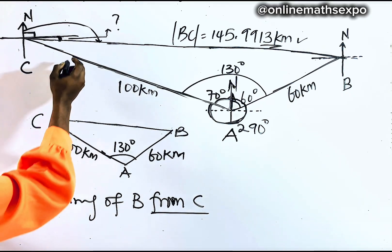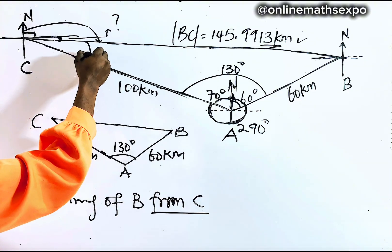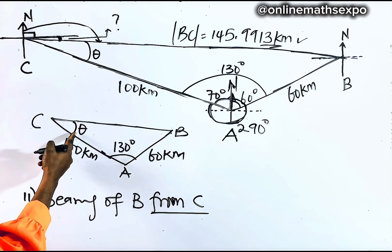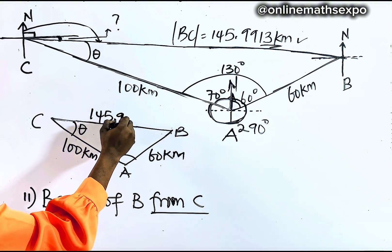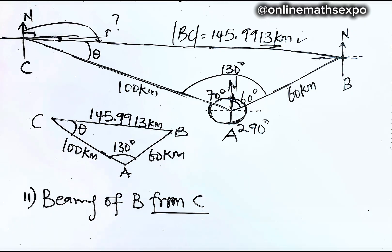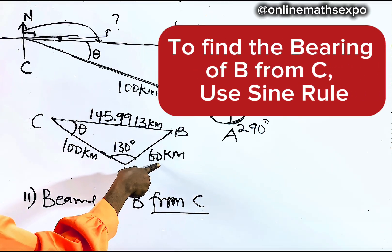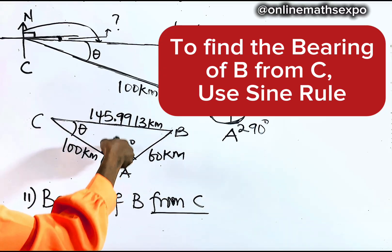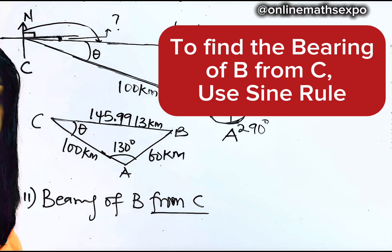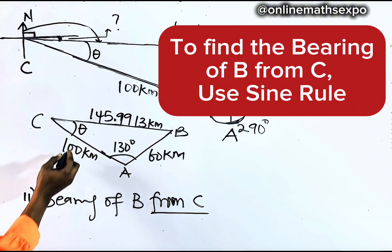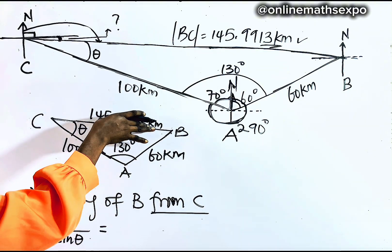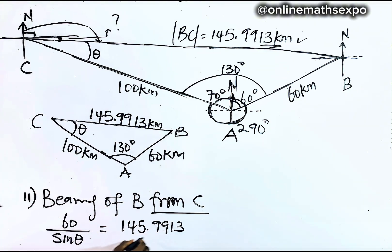To find this angle inside the triangle at C, remember BC = 145.9913 kilometers. You are looking for angle C and you already have the opposite side AB = 60 and the angle opposite to it at A = 130°. Whenever you have a side and the angle opposite to that given side, you can use the sine rule.